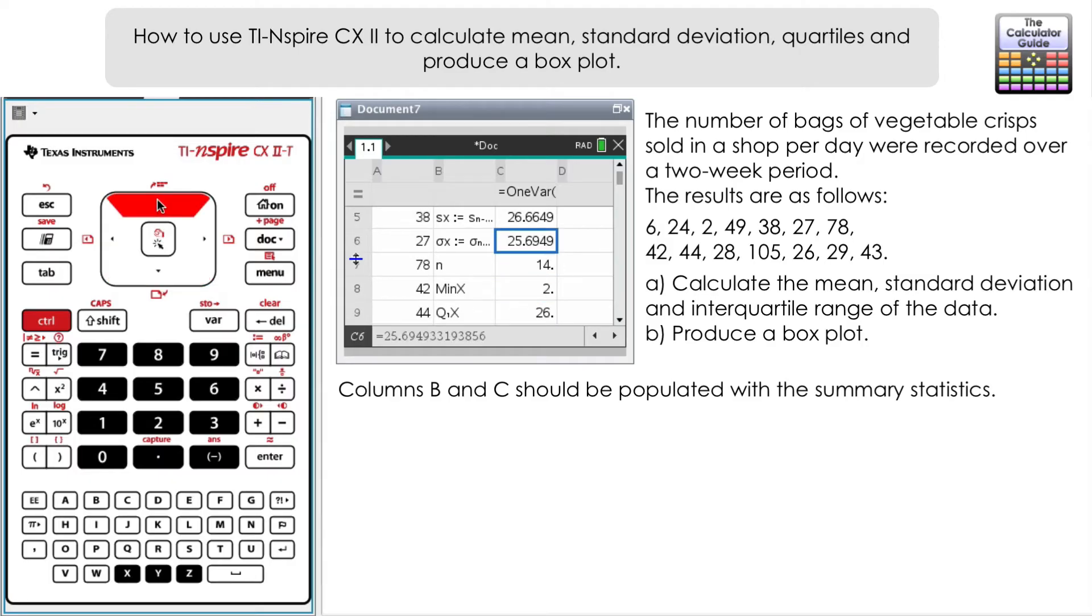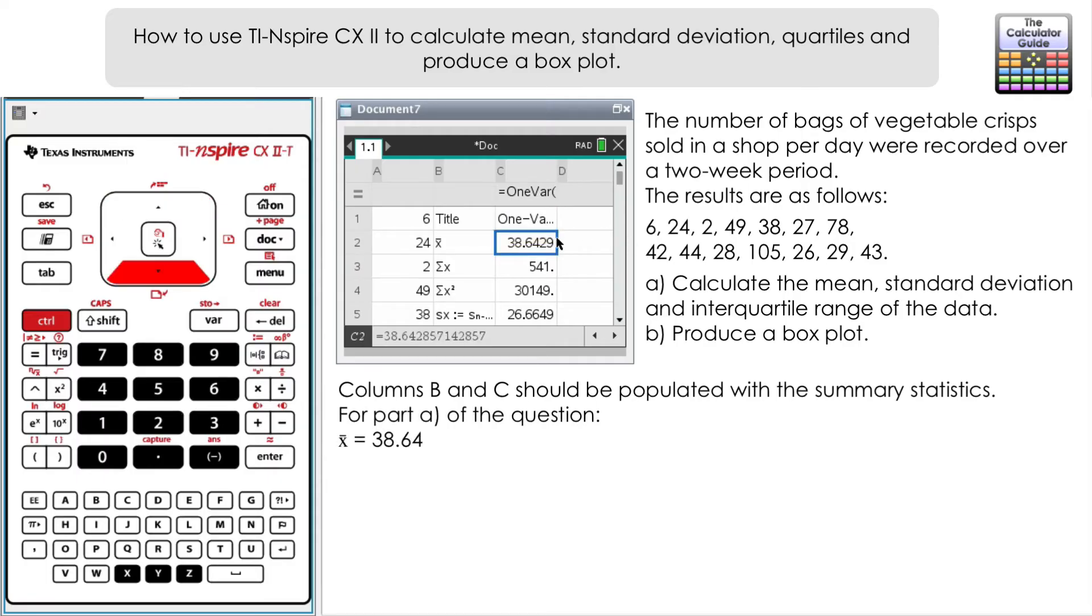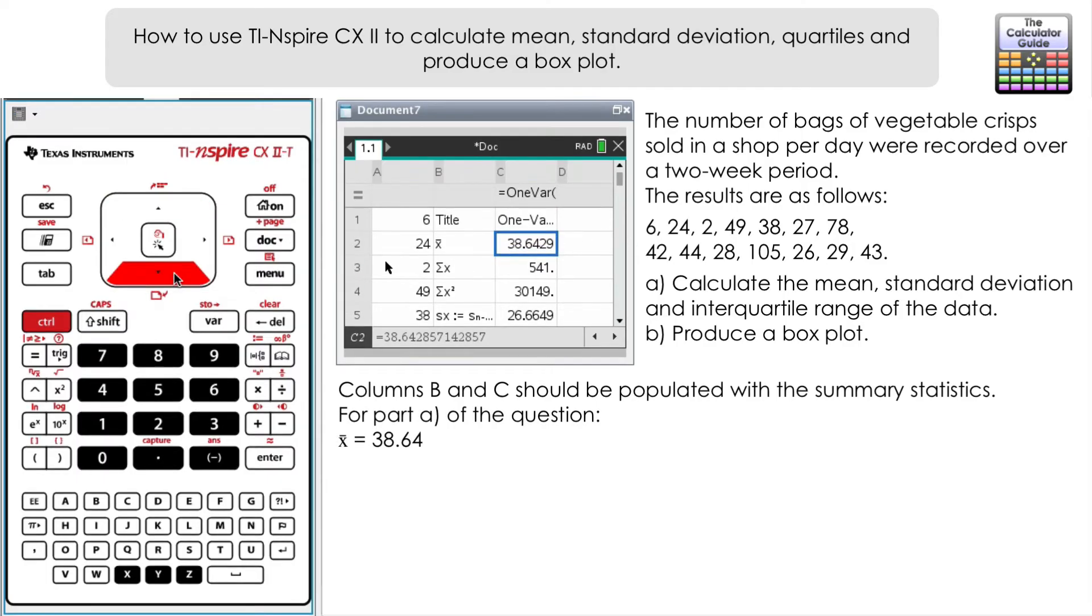Let's see if we can answer the question. What do we need? Well we need the mean, so that's represented here by x̄. The mean is 38.64 to two decimal places.